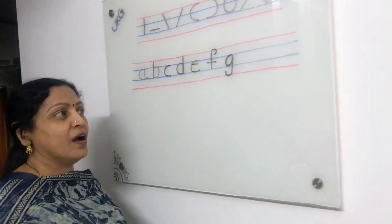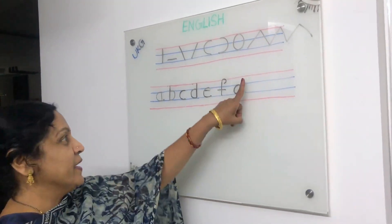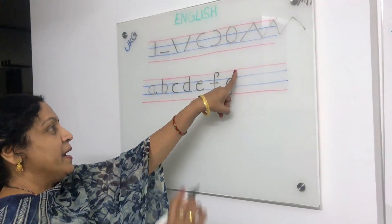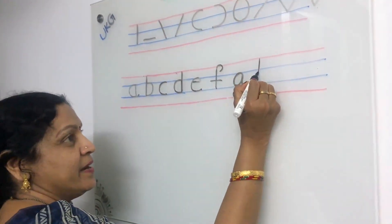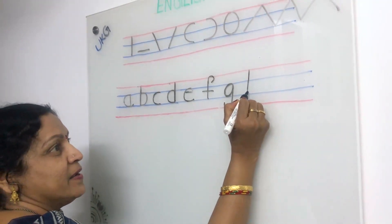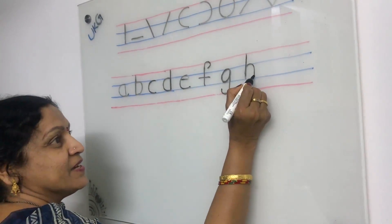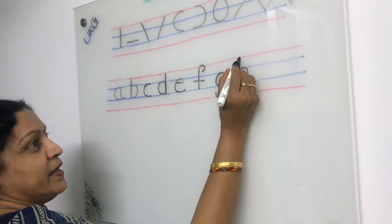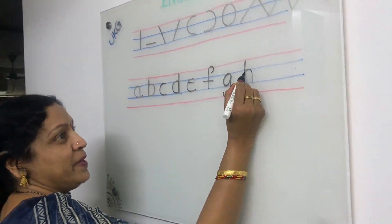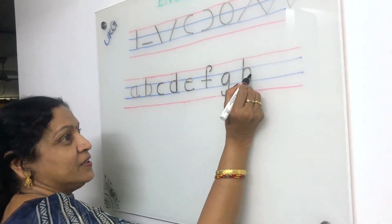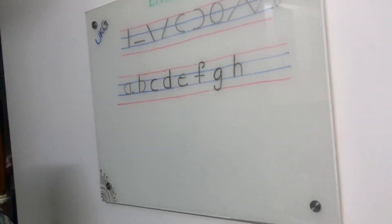Now we are writing small H. Give finger gap and write red line to blue line standing line, and right curve makes small H.